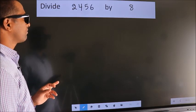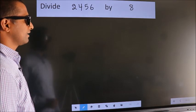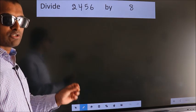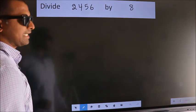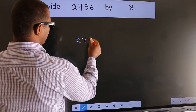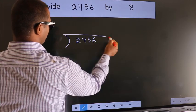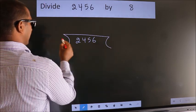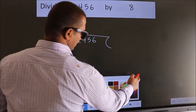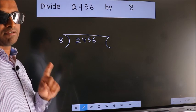Divide 2456 by 8. To do this division, we should frame it in this way: 2456 here, 8 here. This is your step 1.